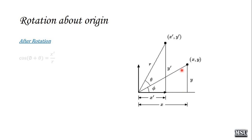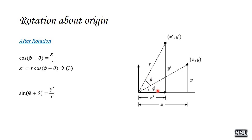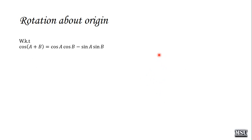After performing rotation, x dash comma y dash makes angle phi plus theta. So cos(phi + theta) = x dash / r, giving x dash = r cos(phi + theta). And sin(phi + theta) = y dash / r, giving y dash = r sin(phi + theta). We know that cos(a+b) = cos a cos b − sin a sin b, and sin(a+b) = cos a sin b + sin a cos b. We apply these to equations 3 and 4.